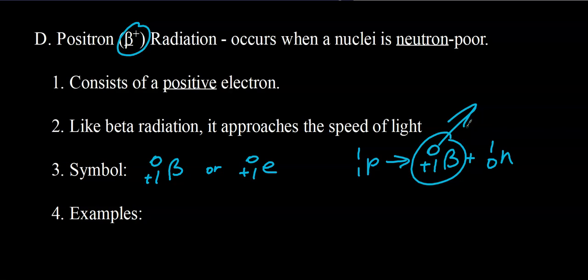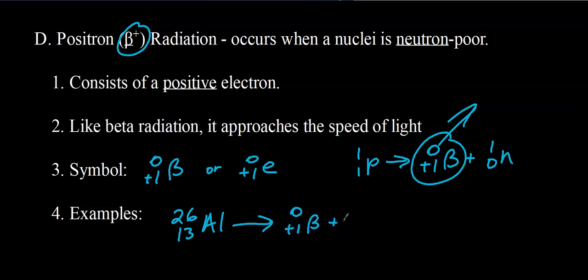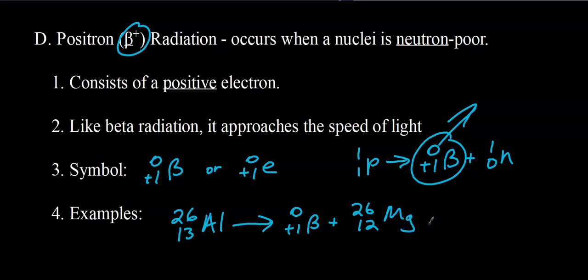An example of positron emission: aluminum-26 undergoes positron emission. The nuclear charge of aluminum-26 is 13. We write the symbol for a positron (zero over plus one beta) on the right side and balance mass and charge. Mass does not change. Charge decreases by 1, so what plus 1 equals 13? That would be 12. What has a nuclear charge of plus 12? That would be magnesium. So aluminum-26 transmutates into magnesium-26 via positron emission.